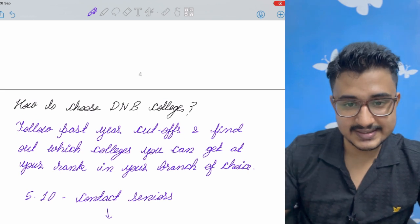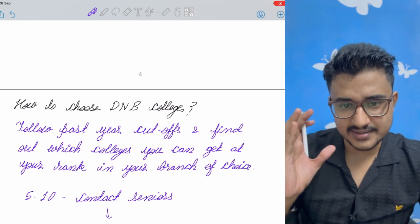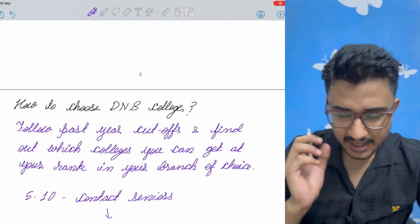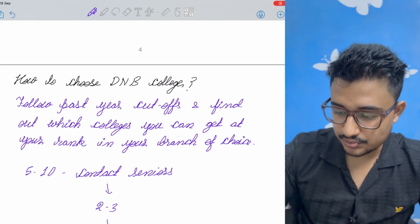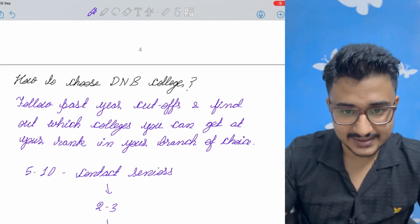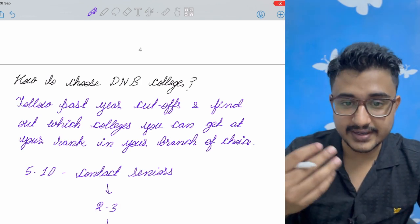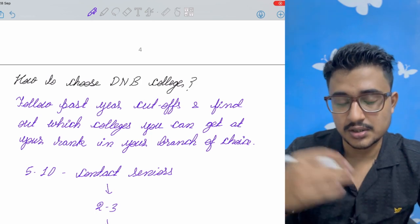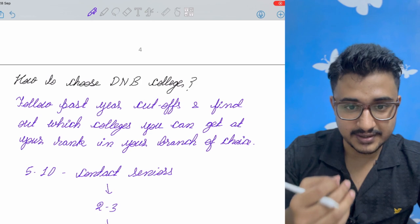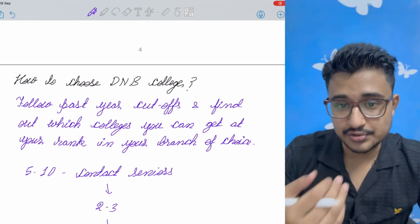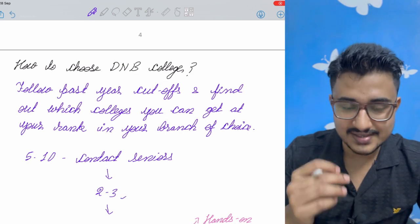Now, how to choose DNB medical colleges? Follow, just go through the past year cutoff and find out which colleges you can get with that rank in your desired branch. Now, you would have five to ten. Contact the seniors. Where is the contact? Try to find out where you are. Like if you are opting for a DNB in a Delhi-based college, then try to contact your college senior who is staying in Delhi that particular stream. From him, you try to get access to that DNB college seniors or you can simply go and do an observation ship.